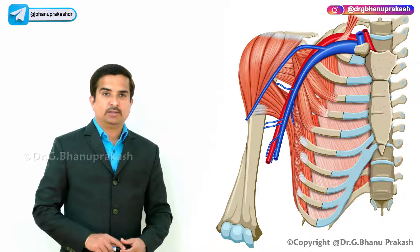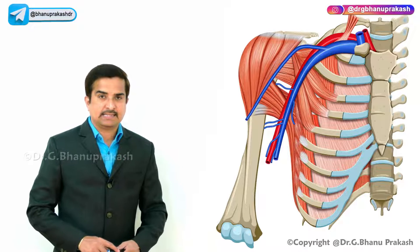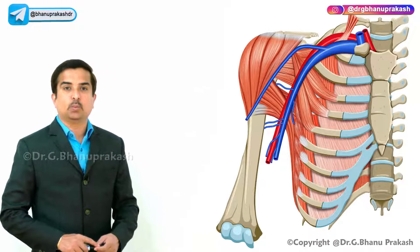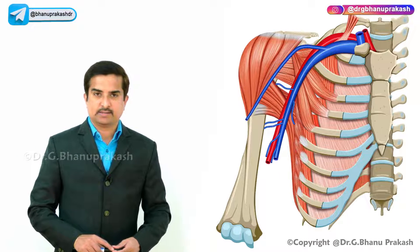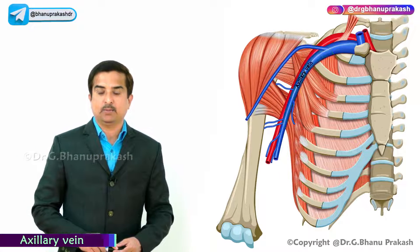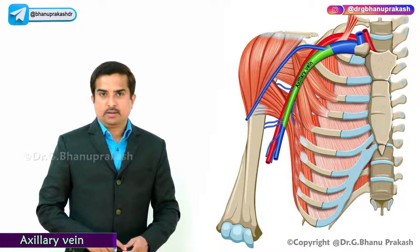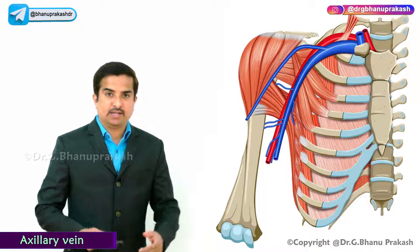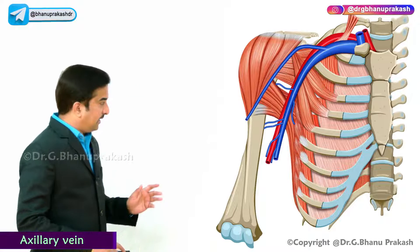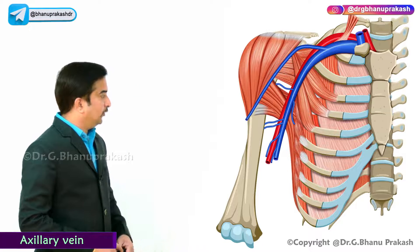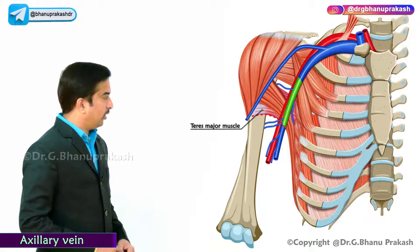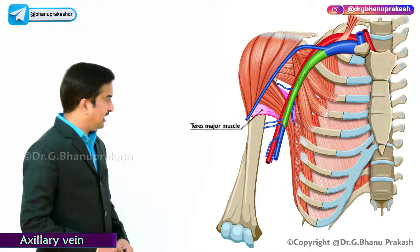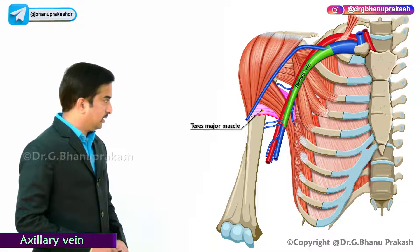In this module we will be discussing an important vein of the upper limb — the axillary vein. Officially, the axillary vein is formed at the lower border of the teres major muscle.